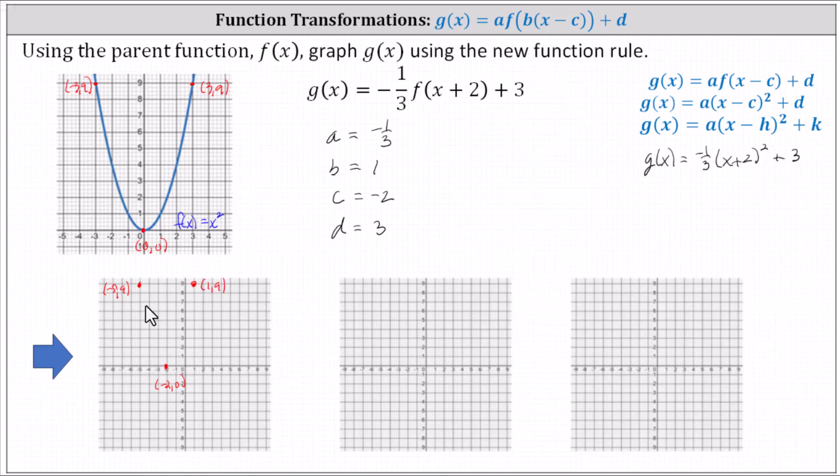This is the graph of f of x after it's been shifted left two units, and this is because c equals negative two. Again, working our way from inside out, a equals negative one-third. Again, this is a vertical reflection as well as a vertical compression by a factor of one-third.